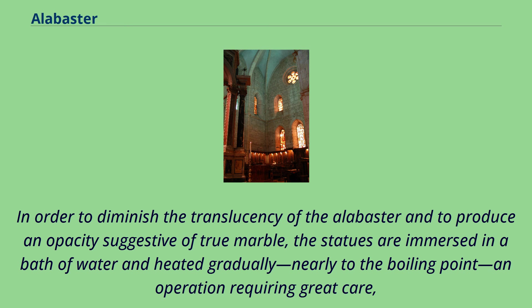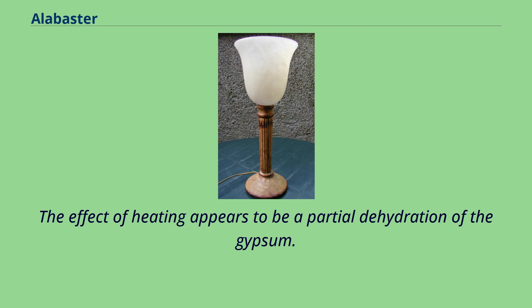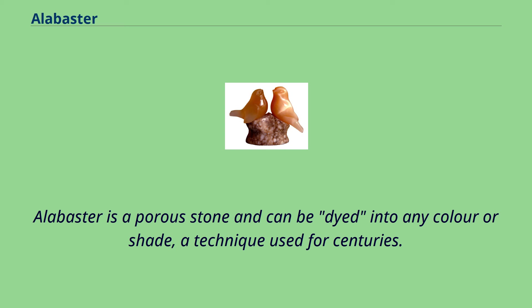In order to diminish the translucency of the alabaster and to produce an opacity suggestive of true marble, the statues are immersed in a bath of water and heated gradually, nearly to the boiling point, an operation requiring great care. Because if the temperature is not regulated carefully, the stone acquires a dead white, chalky appearance. The effect of heating appears to be a partial dehydration of the gypsum. If properly treated, it very closely resembles true marble and is known as marmo de castellina.